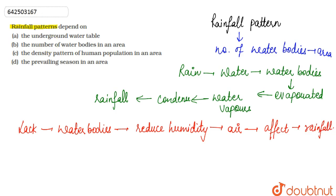Looking at the options: the underground water table, the number of water bodies in an area, the density pattern of human population, and the prevailing season. The rest of the factors have nothing to do with rainfall except option B, so the correct answer is option B.